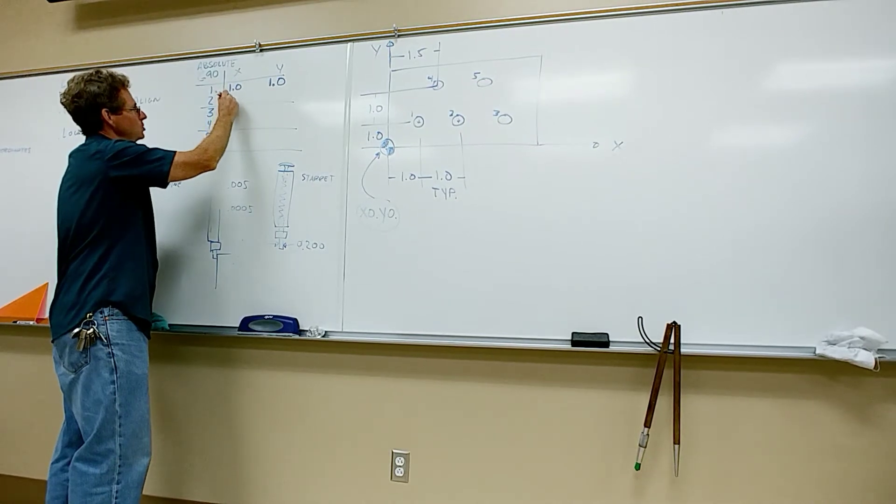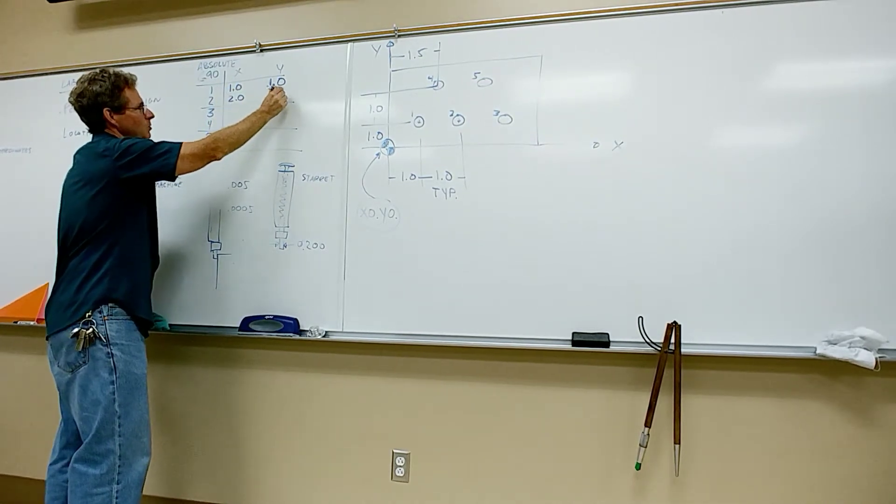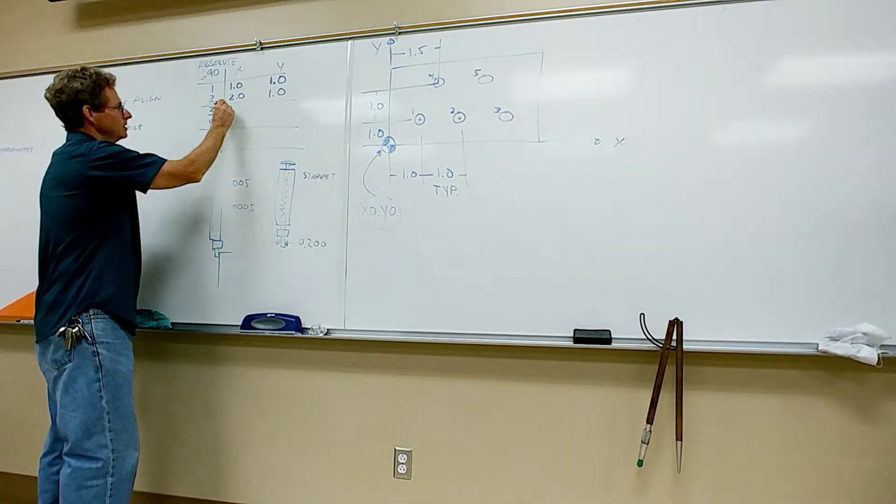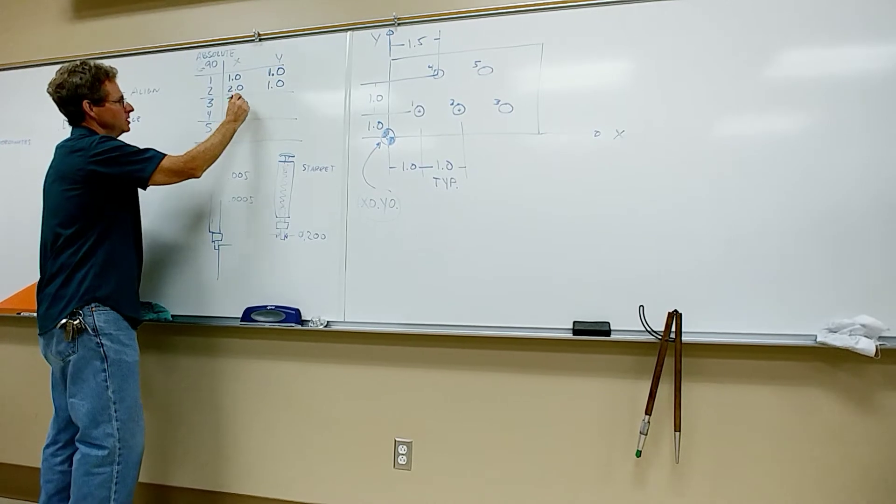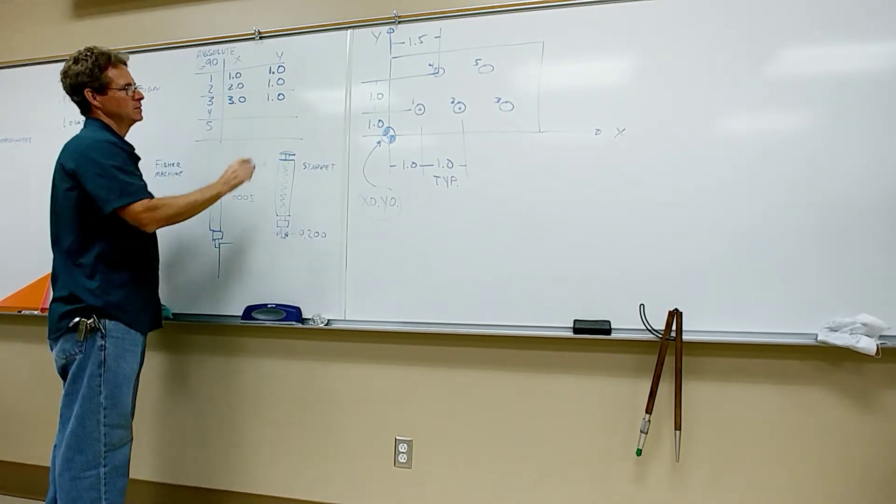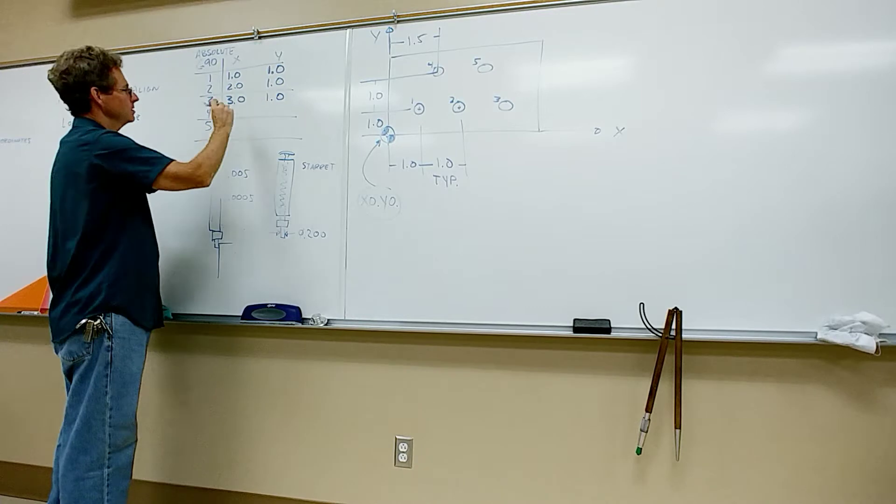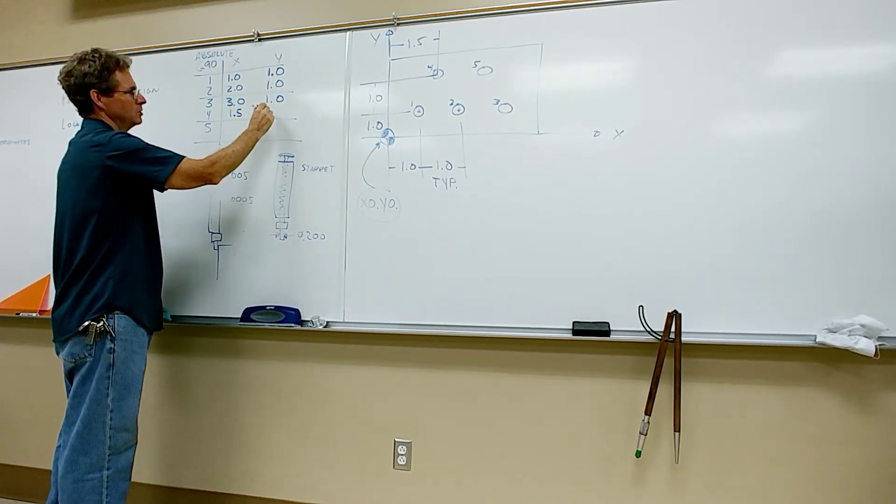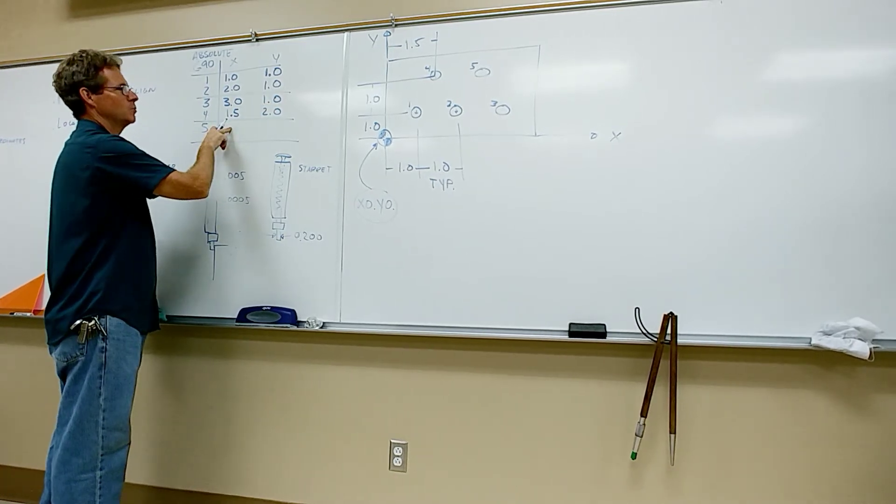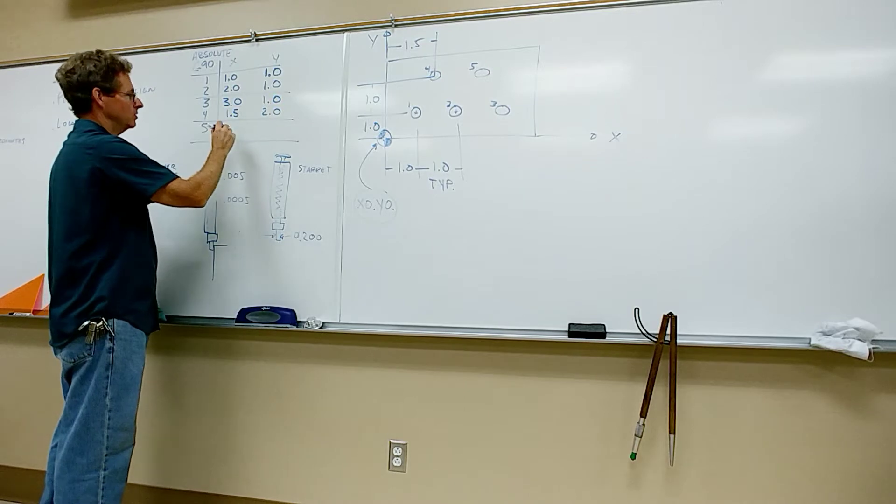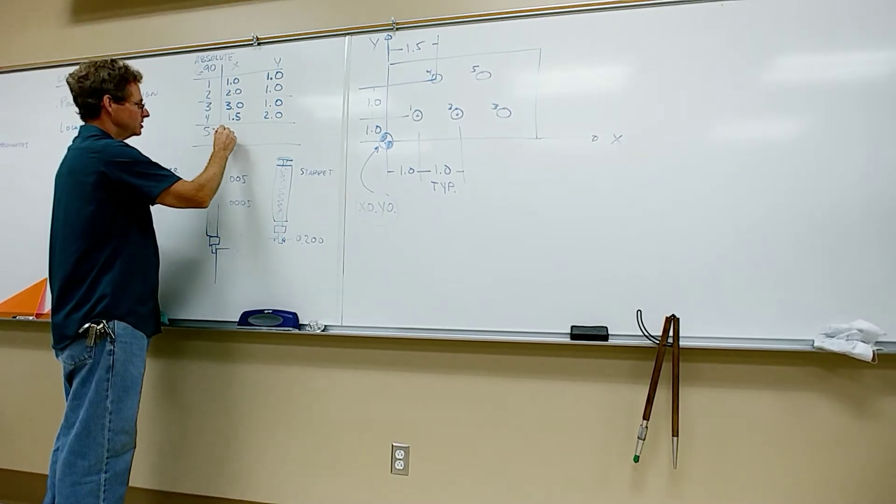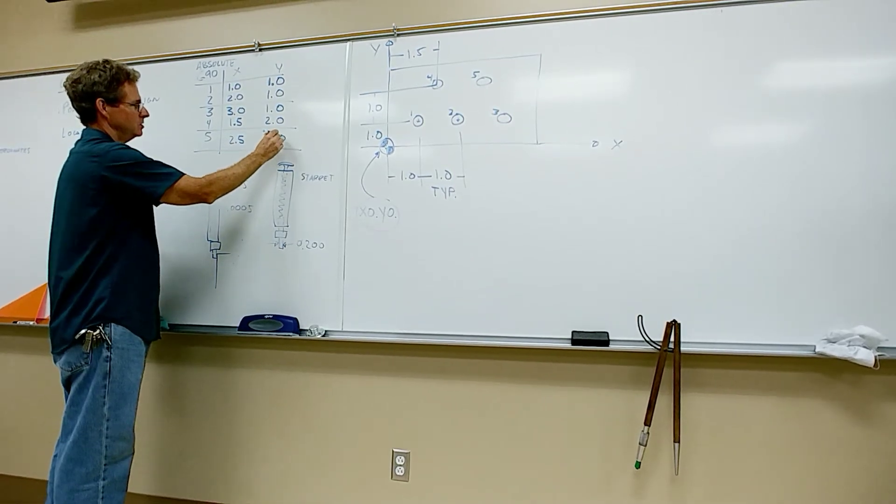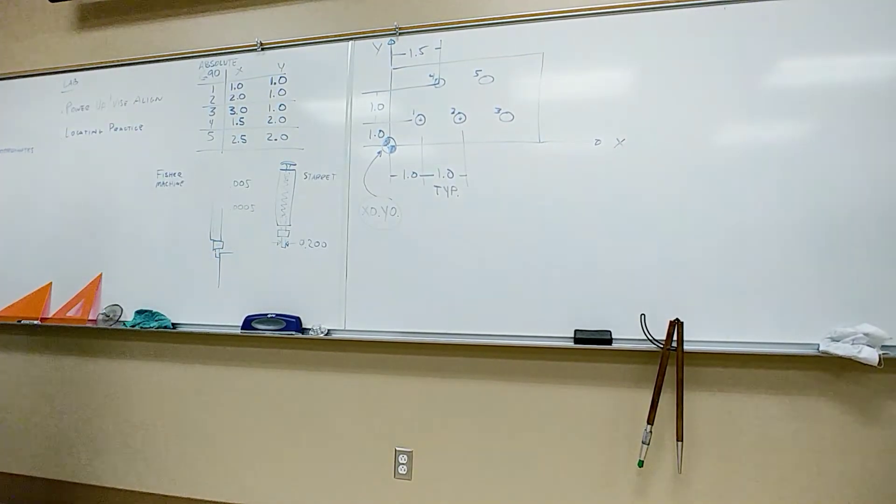Anyway, all right, so back to this thing. So position two. It's just two inches in X. Y stays at one. Going to three. Three inches. Y stays at one. Going to four. An inch and a half. This time the Y goes up to two. Going to 0.5. Just adding everything relative to the corner there. This is an example of baseline dimensioning. Everything's off to one side. 2.5 and 2.0. So there's all those points in absolute.